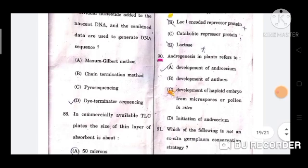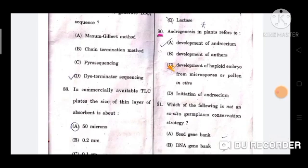Question number 90: Androgenesis in plants refers to? Option C, development of haploid embryo from microspores or pollen in vitro.